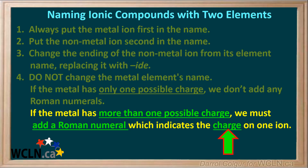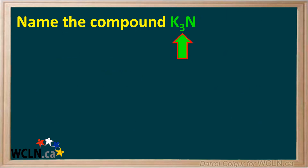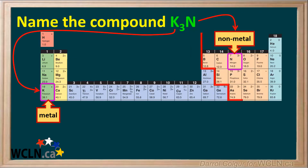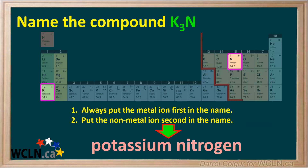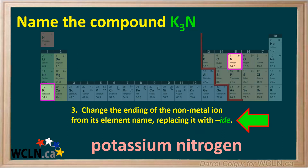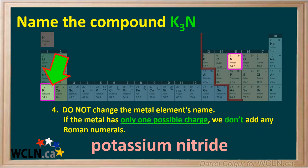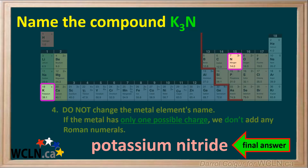Let's do a couple of examples following these steps. We're asked to name the compound K₃N. We see that K, or potassium, is a metal and N, or nitrogen, is a nonmetal. The first two rules tell us to put the metal first and the nonmetal second in the name, giving us potassium nitrogen. The third rule tells us to change the ending of the nonmetal to -ide, so we write the name as potassium nitride. We see the metal potassium has only one possible charge, so according to rule number 4, we don't change the metal's name and we don't add any roman numerals. Therefore, the final answer is the name of this compound is potassium nitride.